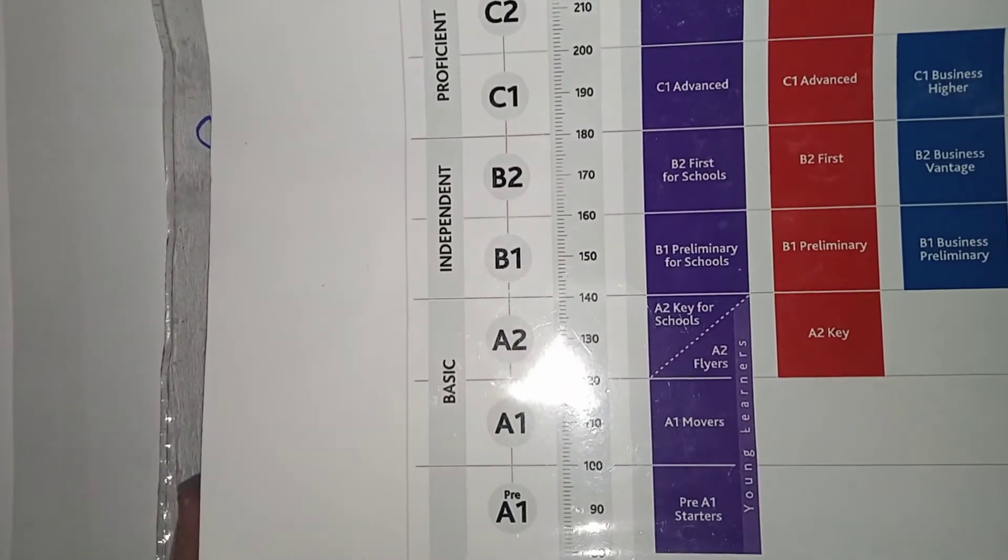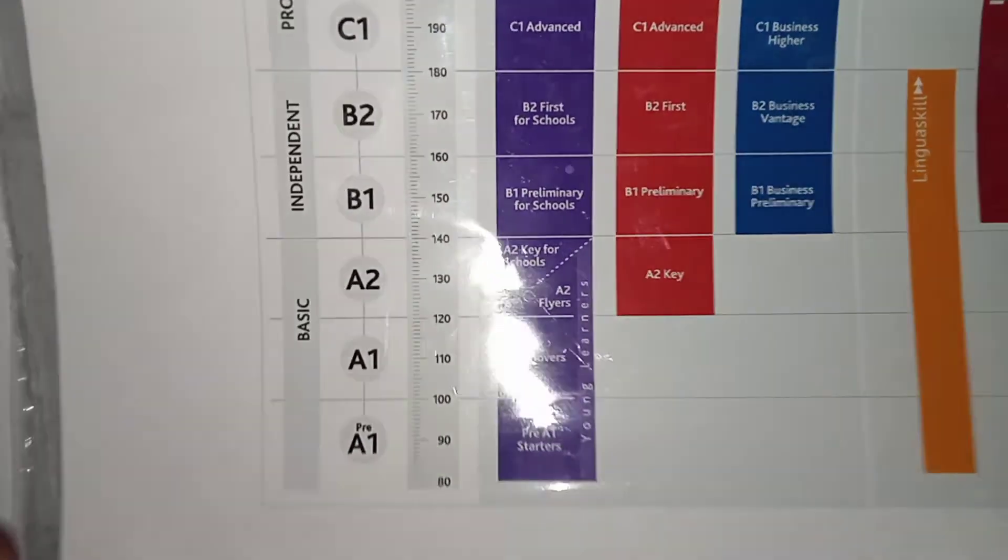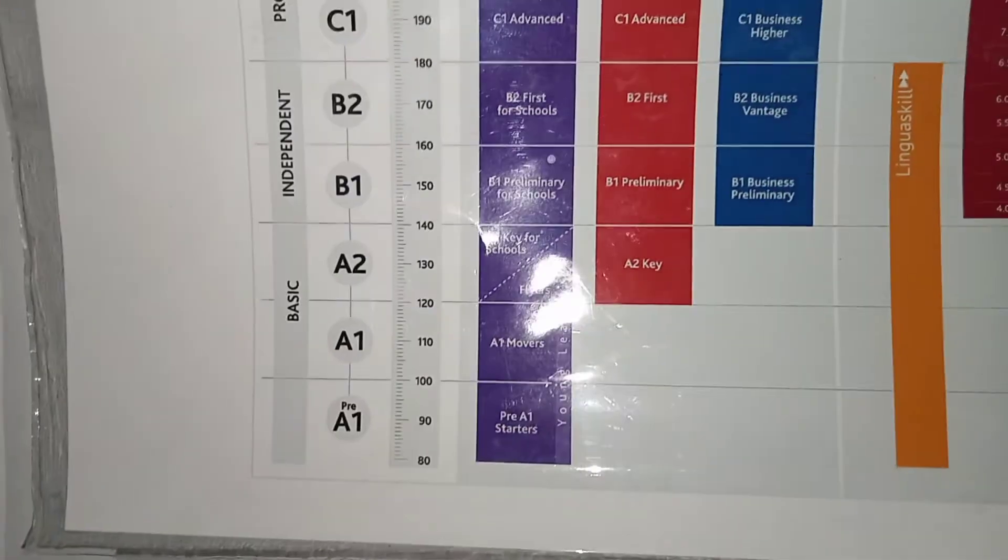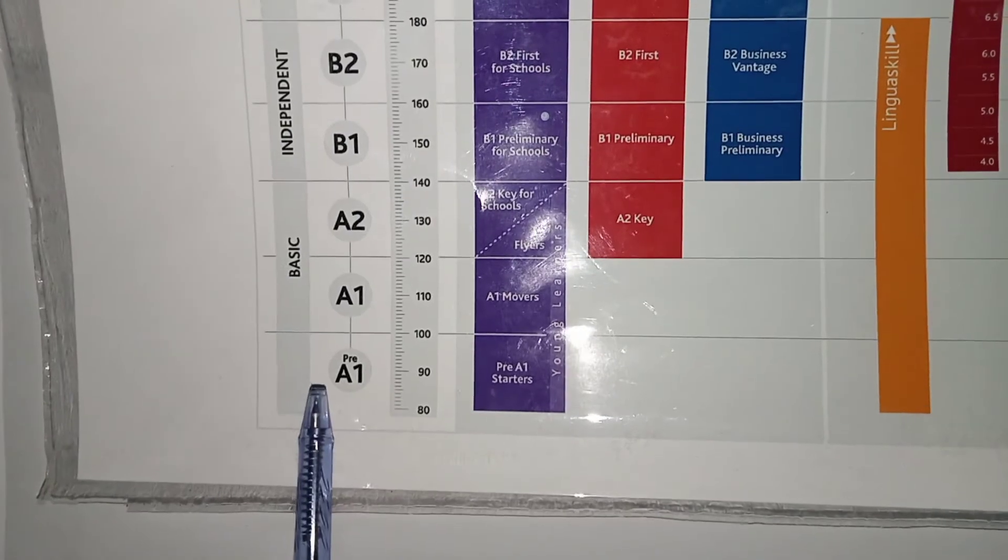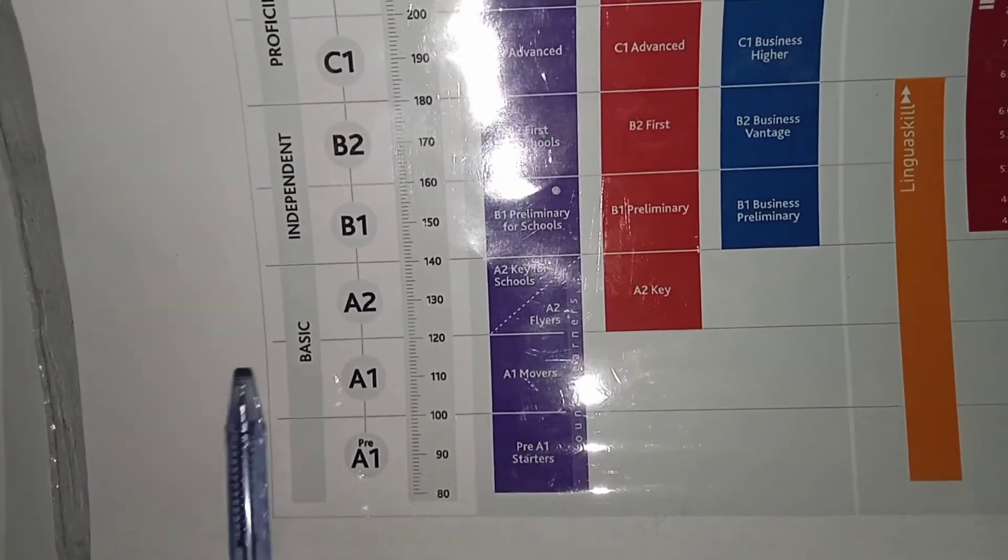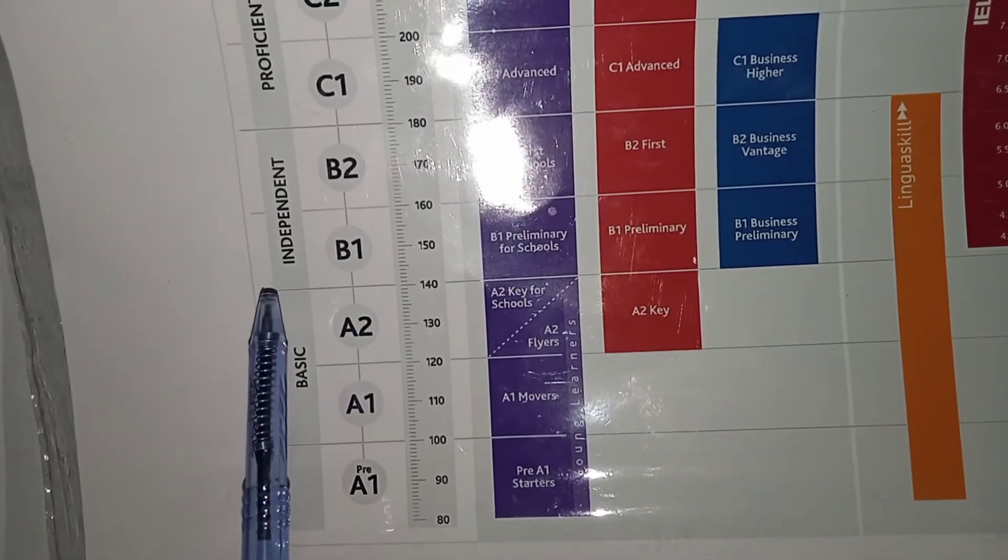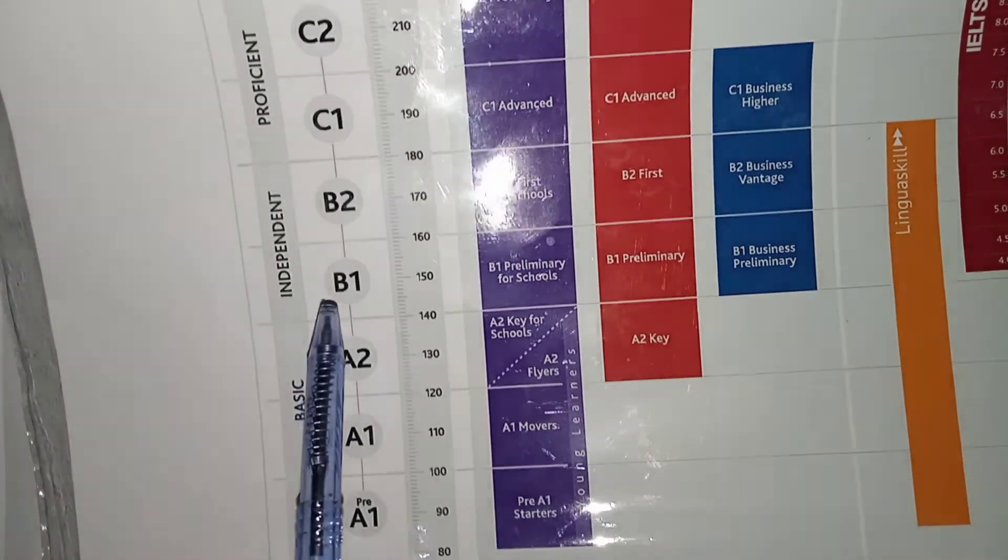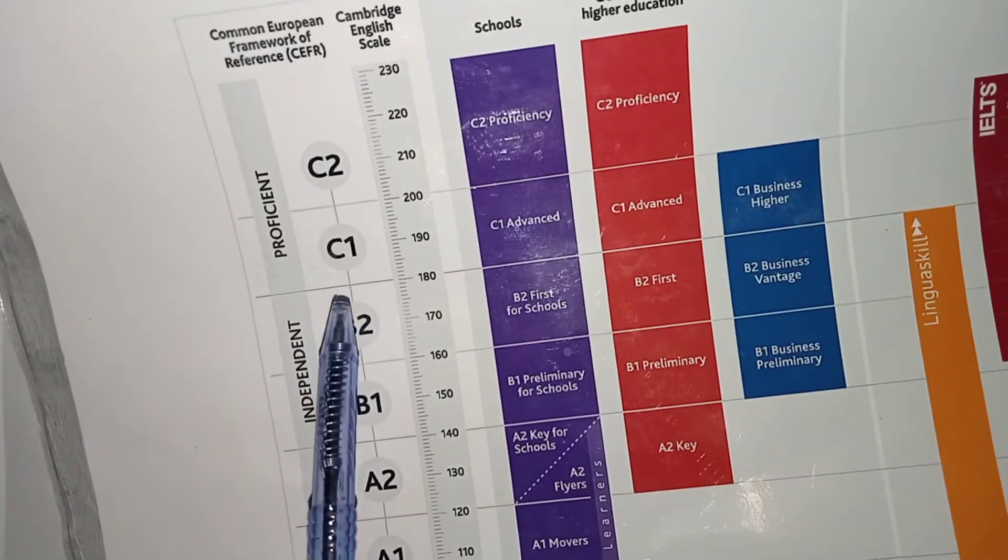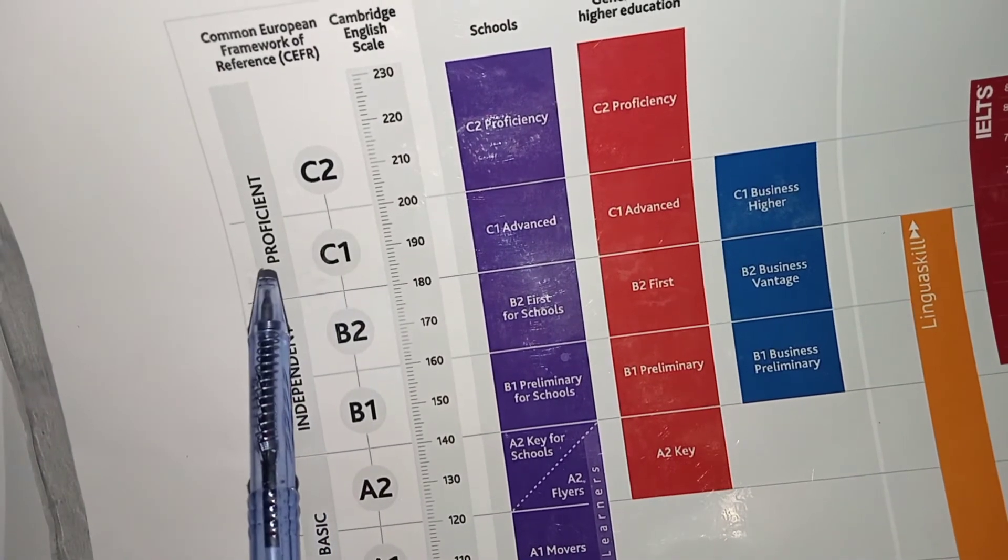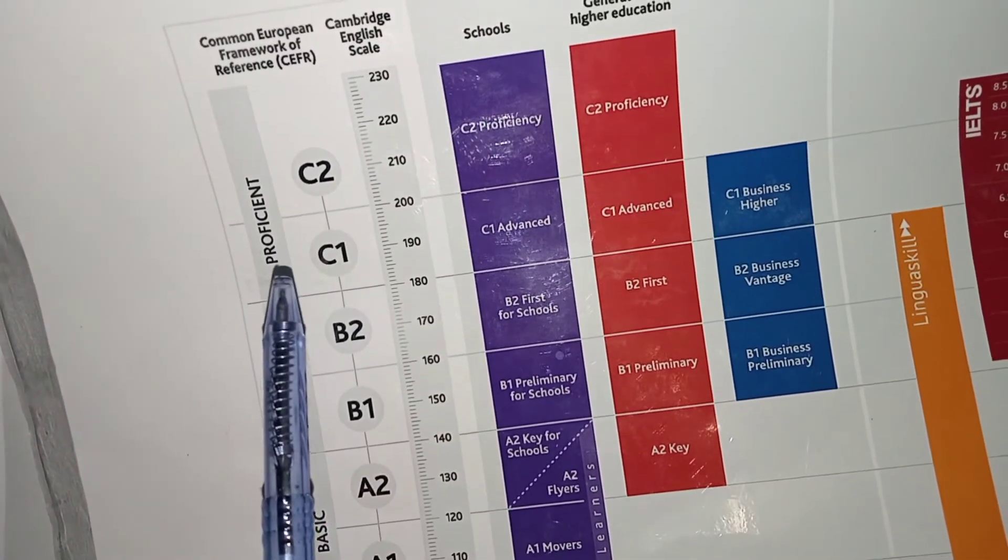You can see here when you come here it shows pre-A1, A1, A2. These are basic English levels. Then you move on to the next level, which is independent or intermediate level B1, B2. Then you have here advanced level C1, C2. This is English proficiency level.